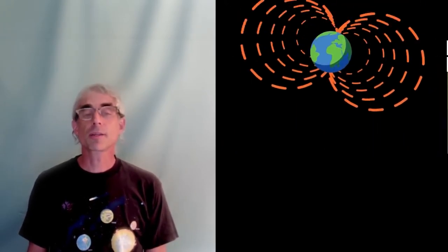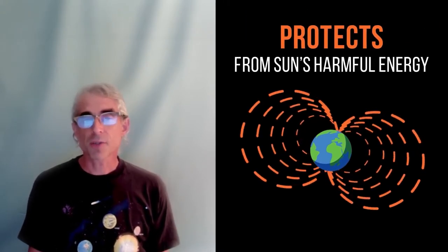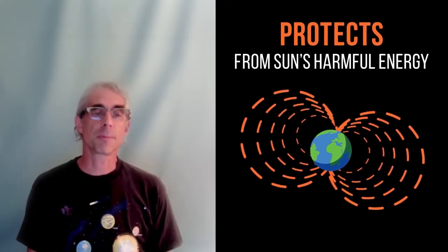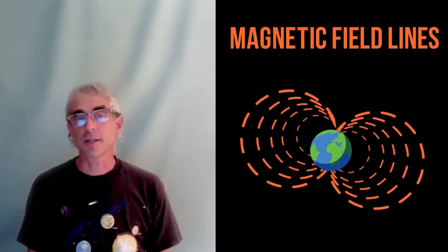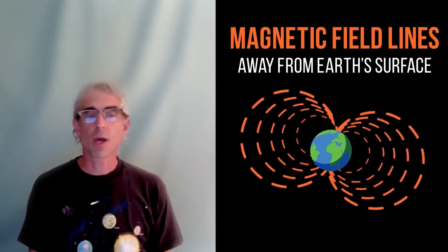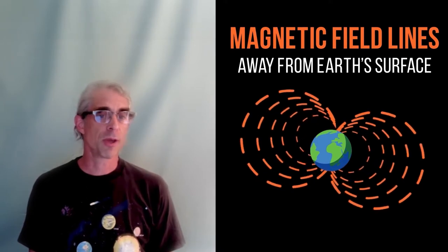The Earth has a powerful magnetic field which protects us from harmful energy that can come from the Sun. The magnetic field lines that surround the Earth can steer charged particles away from hitting the Earth's surface and redirect them to the north and south polar areas.